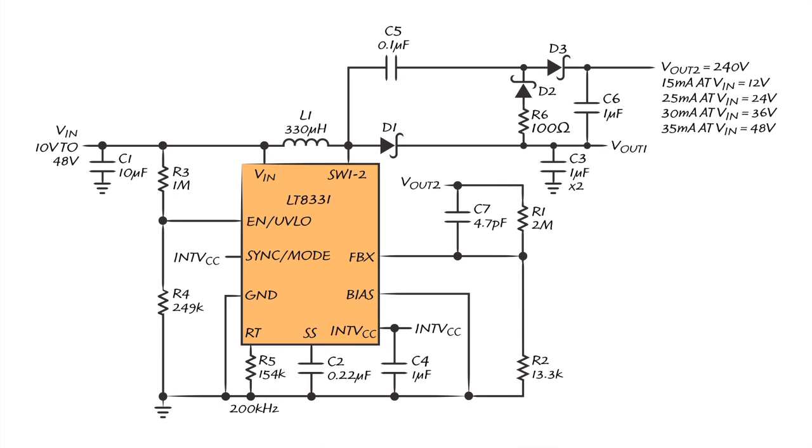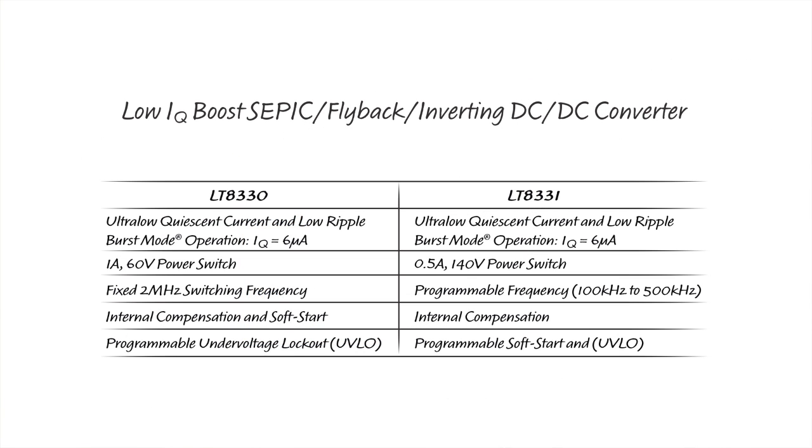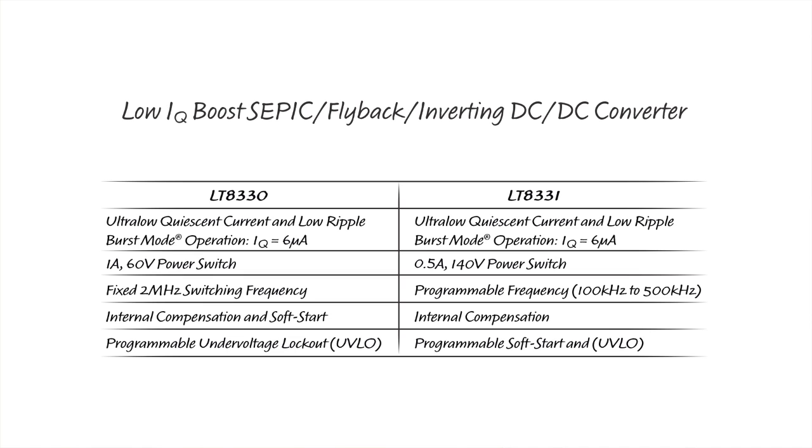The LT8330 and LT8331 are low quiescent current, internally compensated monolithic converters. They increase battery life by reducing the supply current to mere microamps. They achieve high efficiency levels, even at very light loads, while maintaining very low output ripple.